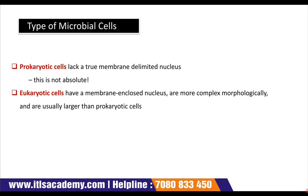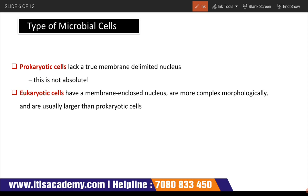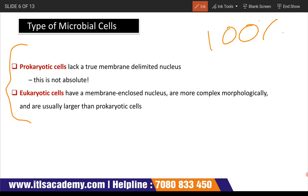Types of microbial cells — this is an important topic. One question in every examination is: what is the difference between prokaryotic cells and eukaryotic cells, explained with the help of a diagram? This question is always in the examination paper. Prokaryotic cells lack a true membrane-delimited nucleus, whereas eukaryotic cells have a membrane-enclosed nucleus. Eukaryotic cells are more complex morphologically and are usually larger than prokaryotic cells.